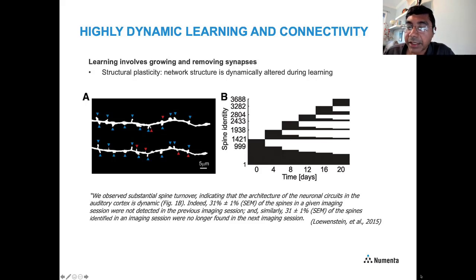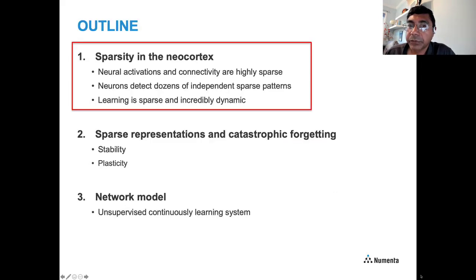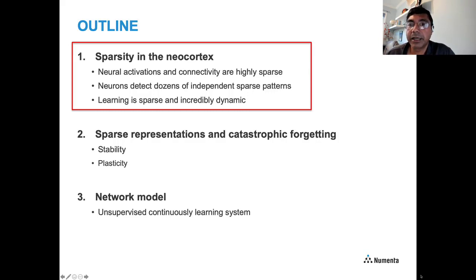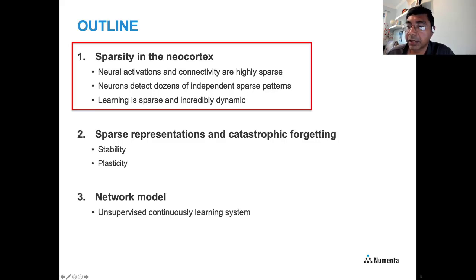This is quite different from deep learning systems today. To summarize the review of sparsity in the neocortex: neural activations and connectivity are highly sparse; neurons detect dozens of independent sparse patterns; and learning itself is sparse, localized to dendritic segments, and incredibly dynamic, with the system's structure changing constantly.